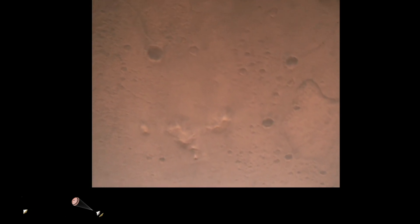Nav filter converged, velocity solution 3.3 meters per second, altitude 7.4 kilometers. Now has radar lock on the ground. Current velocity is about 100 meters per second, 6.6 kilometers above the surface of Mars.